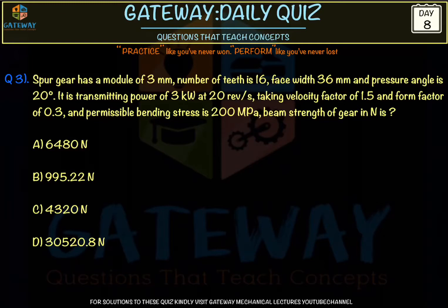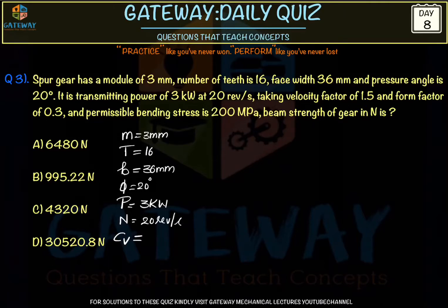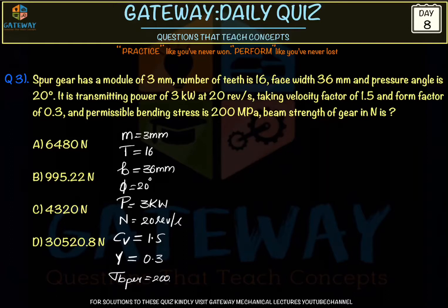The spur gear data: module m = 3 mm, number of teeth = 16, face width b = 36 mm, pressure angle = 20°. It transmits 3 kW at 20 rev/s. The velocity factor C_v = 1.5, and the Lewis form factor y = 0.3. Permissible bending stress σ_b = 200 MPa. We need to calculate the beam strength of the gear.